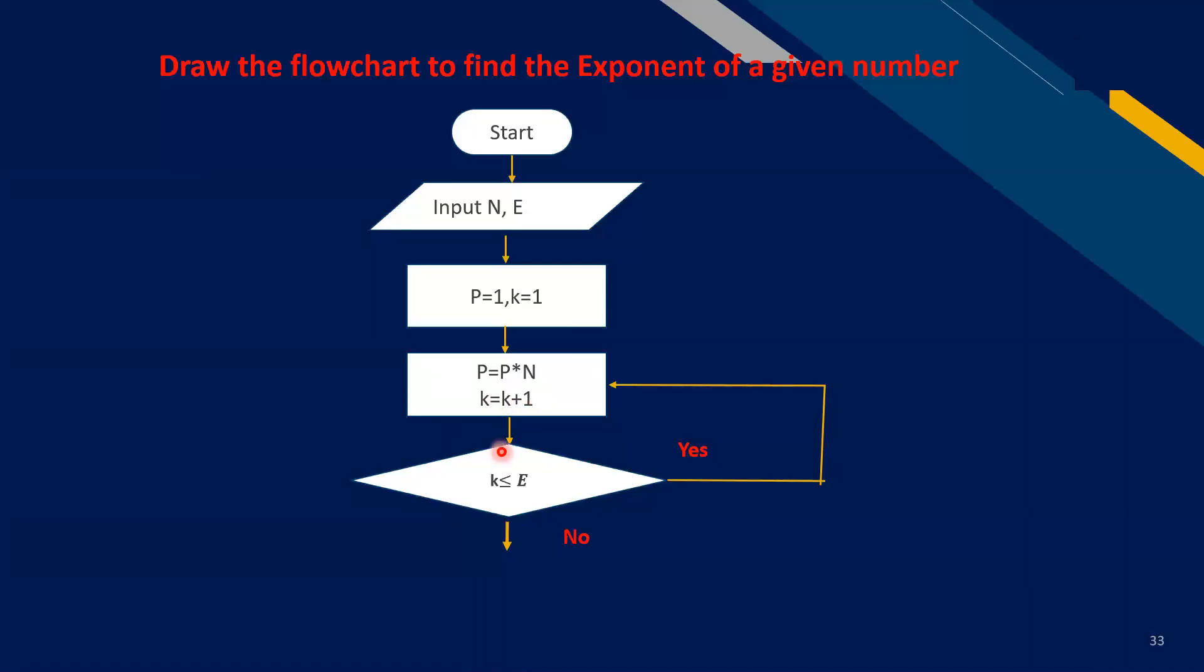It will check that k is less than or equal to e. If yes, then these lines indicate for the loop. These statements will be repeated till the value of k is less than e. If no, then output and stop.